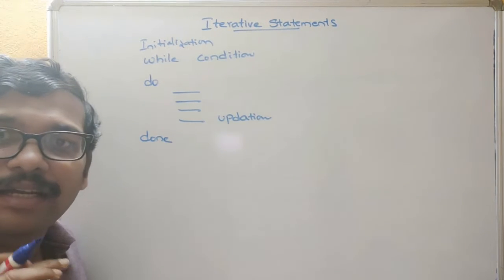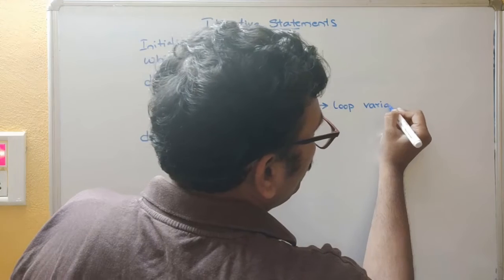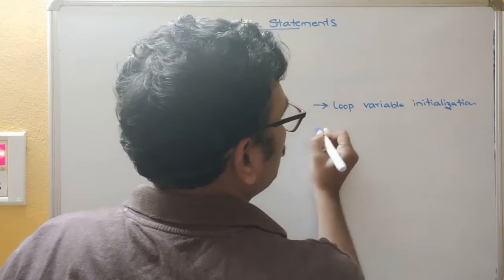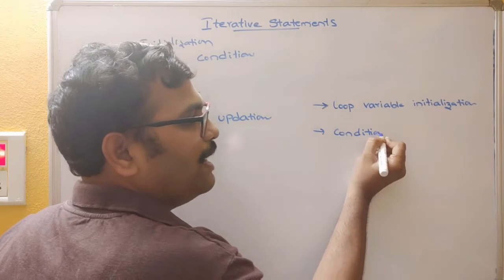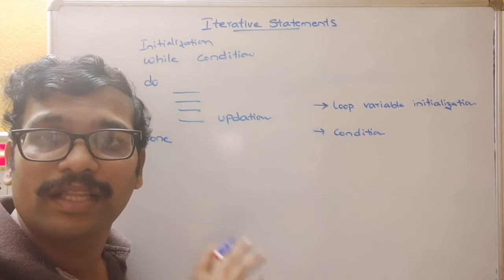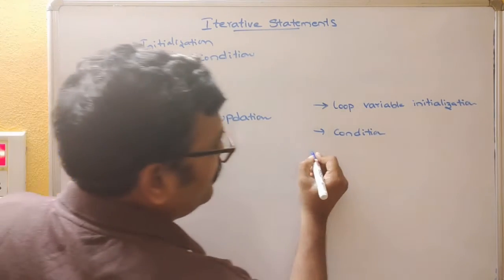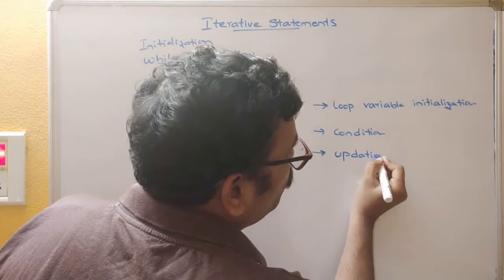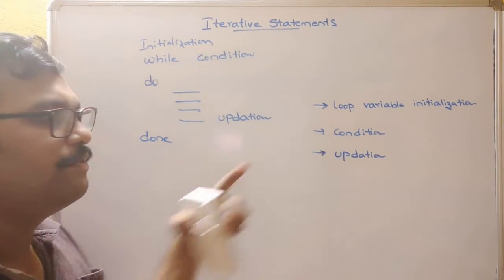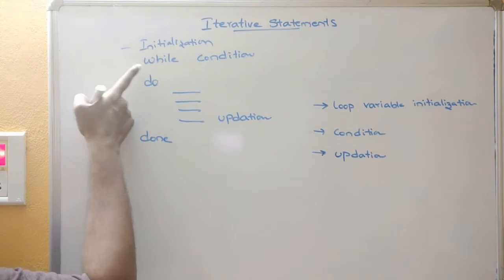Whatever iterative statement you use, three things must be done: first, loop variable initialization; second, condition — because after a finite number of steps the loop should terminate, otherwise it will become an infinite loop; and third, updation — for every iteration the loop variable should be updated so that it reflects on the condition, and after a finite number of steps the condition becomes false and the loop terminates.